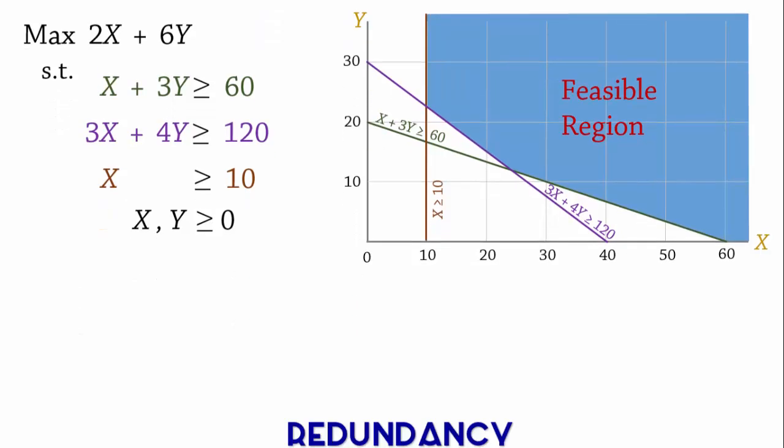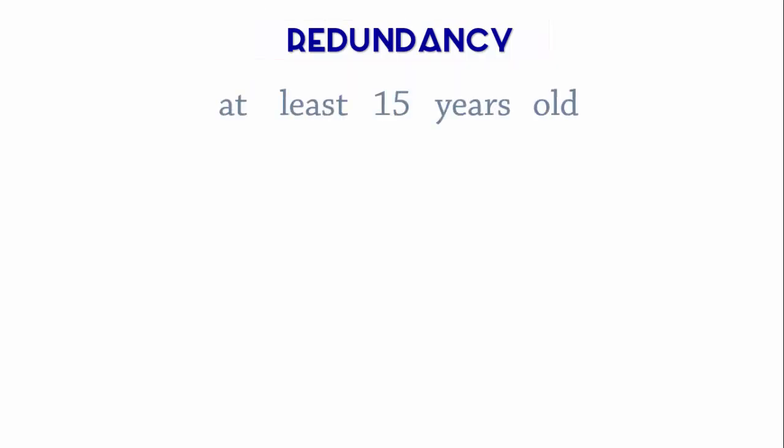The last special case we'll discuss here is redundancy. Suppose you're applying to enter a contest where applicants have to be at least 15 years old. If x represents age, then we have x greater or equal to 15.